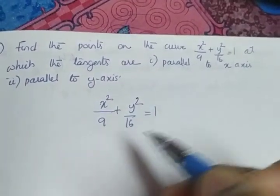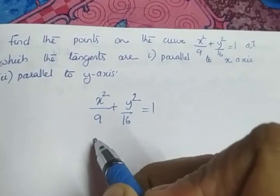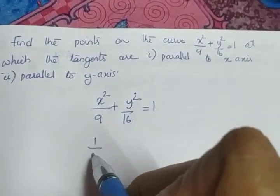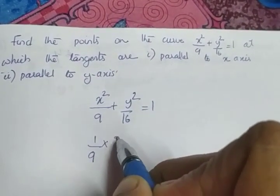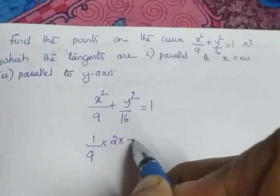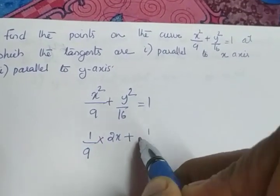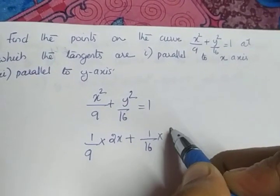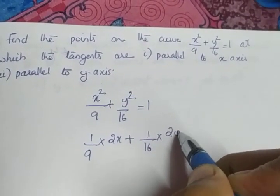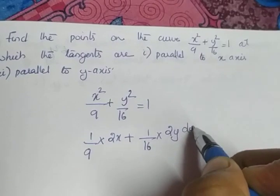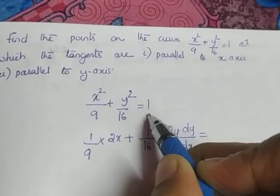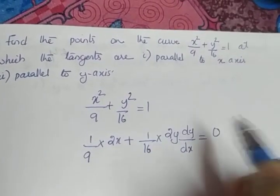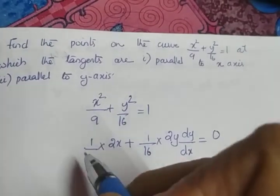As usual, differentiate. So 1/9 is a constant; derivative of x² is 2x. Plus 1/16 is a constant; derivative of y² is 2y into dy/dx, equal to 0, since the derivative of the constant 1 is 0.